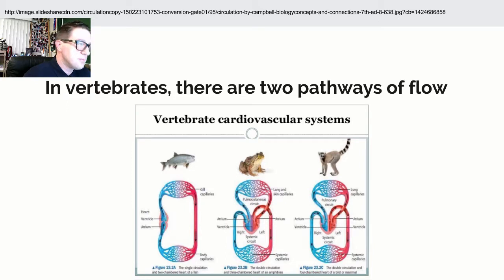If we look at a simple vertebrate like a fish, they actually have one pathway and two chambers of the heart. If we look at amphibians, they have two pathways. So one that leads to the lungs and back, one leads from the heart to the rest of the body and back.